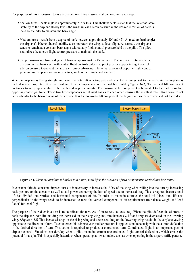The purpose of the rudder in a turn is to coordinate the turn. As lift increases, so does drag. When the pilot deflects the ailerons to bank the airplane, both lift and drag are increased on the rising wing and, simultaneously, lift and drag are decreased on the lowering wing. This increased drag on the rising wing and decreased drag on the lowering wing results in the airplane yawing opposite to the direction of turn. To counteract this adverse yaw, rudder pressure is applied simultaneously with the aileron deflection in the desired direction of turn. This action is required to produce a coordinated turn.